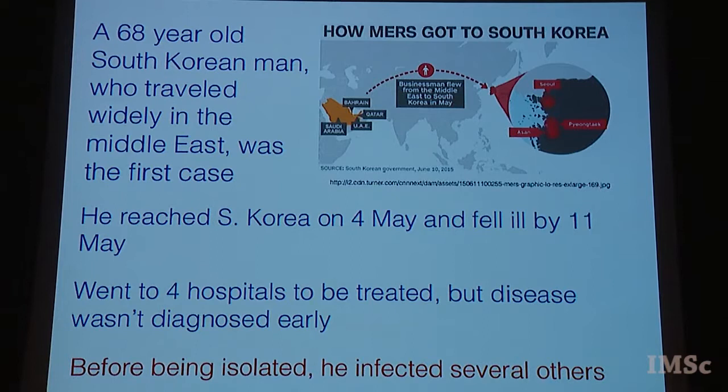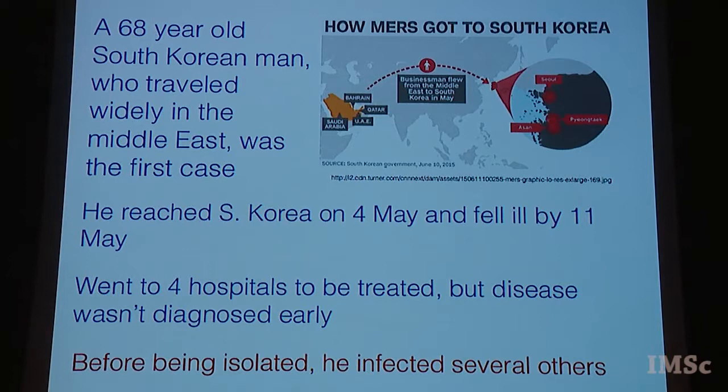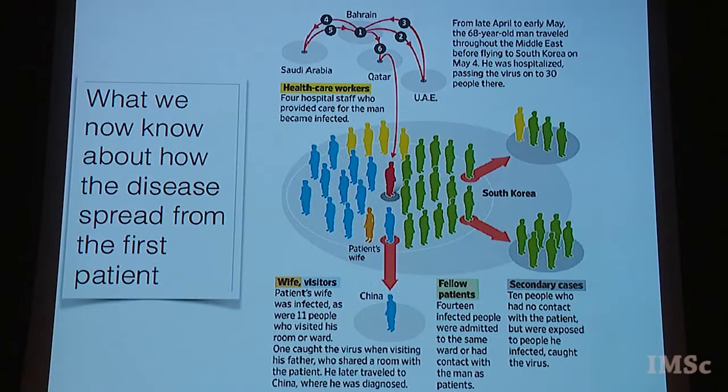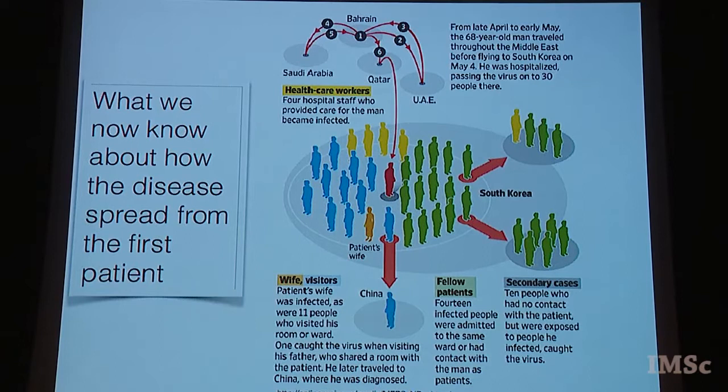He reached South Korea on the 4th of May and fell ill by the 11th of May. Nobody knew what was wrong with him, so he went around four hospitals meeting various doctors. His disease could not be diagnosed until finally, at least about ten days between his reporting to the first hospital and being diagnosed, they figured out what was wrong with him. But before being isolated, when they figured out he had MERS, he managed to infect several other people.